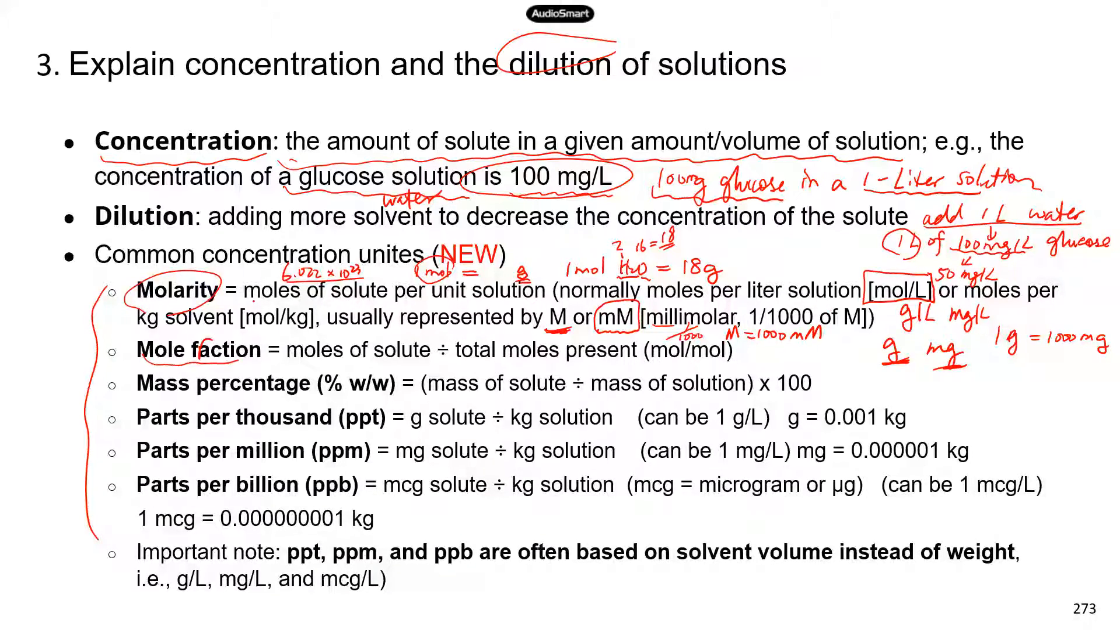Now second one is mole fraction. That's moles of the solute divided by the total moles present. So that includes both the solute and solvent, plus solvent. So that's mole fraction. That should be pretty easy to calculate. You get a number for moles of the solute. You get a number for moles of the solvent. And then you're going to use these two numbers to calculate the total. And then just divide moles of the solute by the total moles. And that's it.